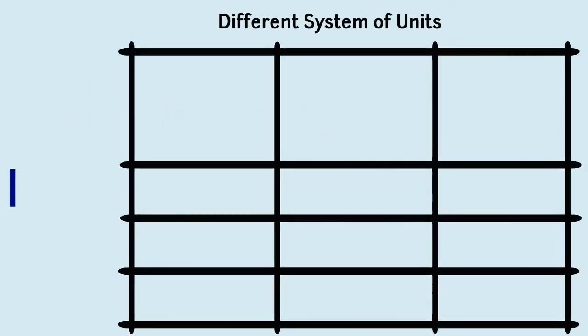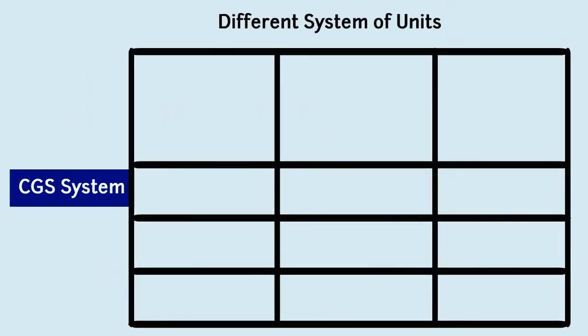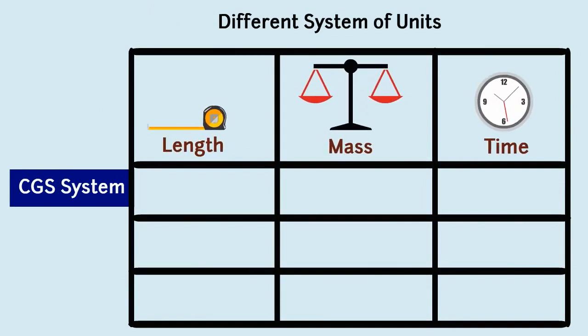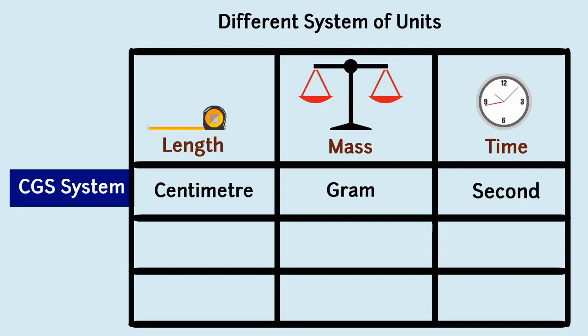Let us first start with CGS system. In this system, the base units for length, mass and time are cm, gram and second respectively.